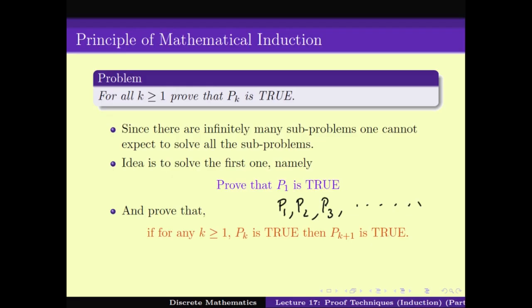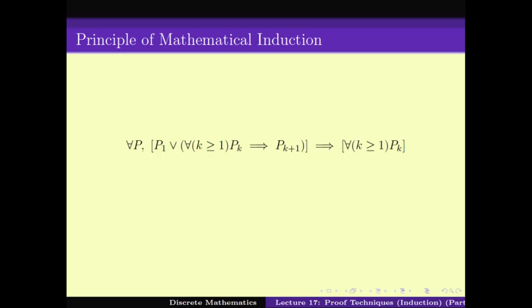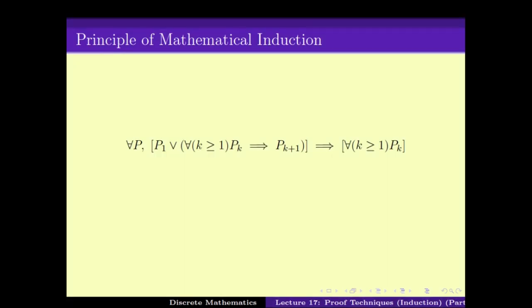Since there are infinitely many sub-problems, one cannot expect to solve all of them separately. So instead, we start by proving the first problem P1. Then, if we can prove that for any k greater than or equal to 1, if Pk is true then Pk+1 is true, we would be proving all cases. P1 is true, therefore P2 must be true; since P2 is true, P3 is true; and so on — thus we prove that for all n, Pn is true.